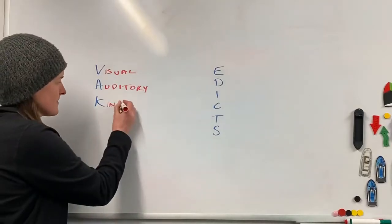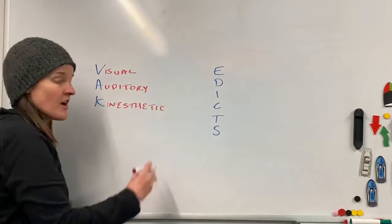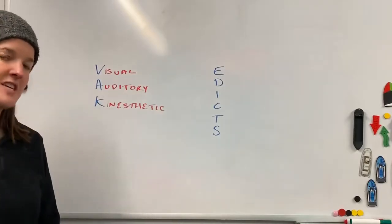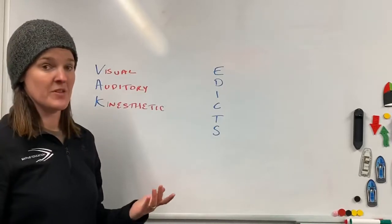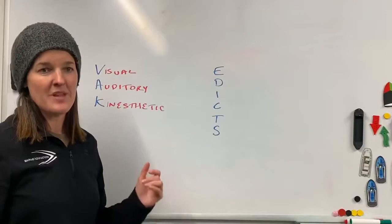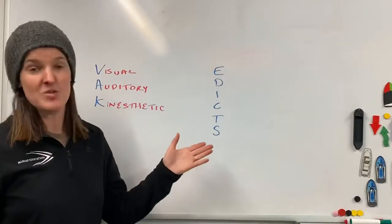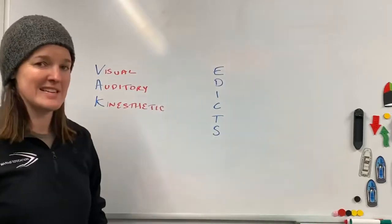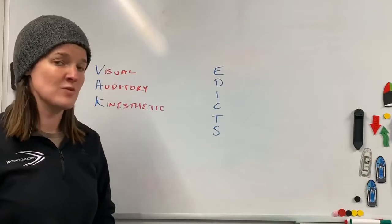Our entire aim is to fulfill all three of those learning styles. By fulfilling all of those, it means we hit every type of learner. The RYA has a model of how we can ensure that happens, and that model is EDICTS. You definitely want to write this down because you're going to need to use this throughout your entire course and all of your teaching in the future.